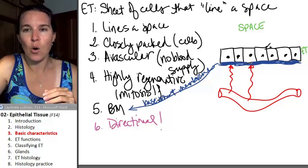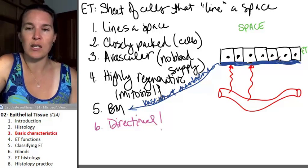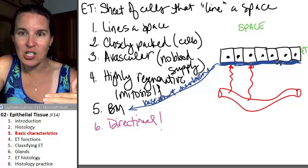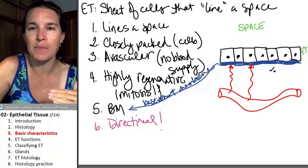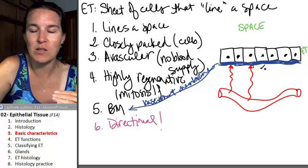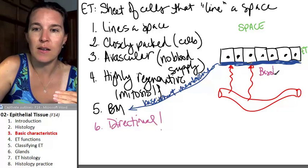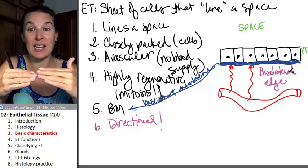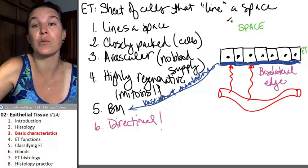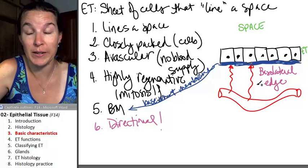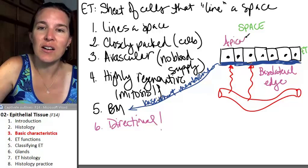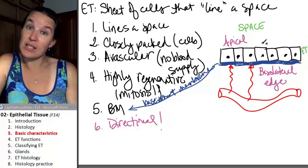Epithelial tissue, if I rolled one of these cells across the room, it has an end, an edge that attaches to the basement membrane, and that's the basolateral side. So the basolateral edge is the edge of the tissue that's close to the basement membrane. And then the apical edge is the edge that's close to the space.